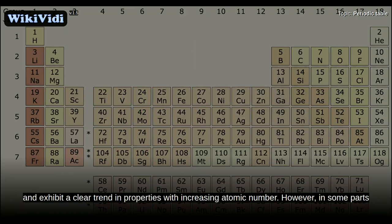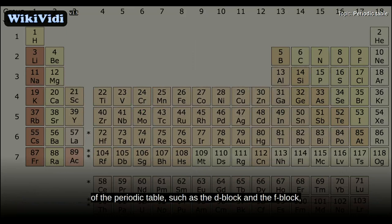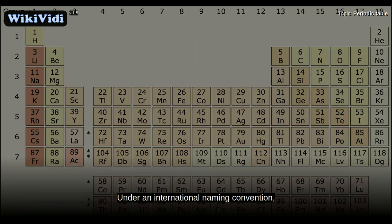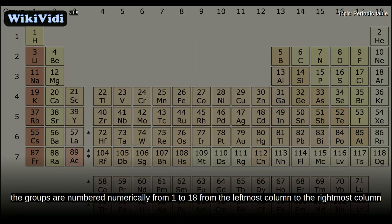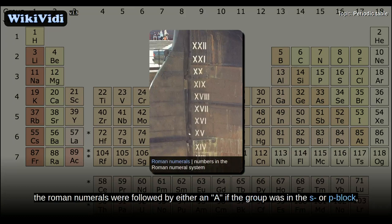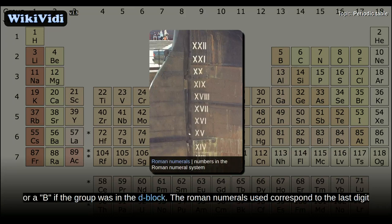However, in some parts of the periodic table, such as the D-block and the F-block, horizontal similarities can be as important as, or more pronounced than, vertical similarities. Under an international naming convention, the groups are numbered numerically from 1 to 18 from the leftmost column to the rightmost column. Previously, they were known by Roman numerals. In America, the Roman numerals were followed by either A, if the group was in the S or P block, or B, if the group was in the D block. The Roman numerals used correspond to the last digit of today's naming convention.